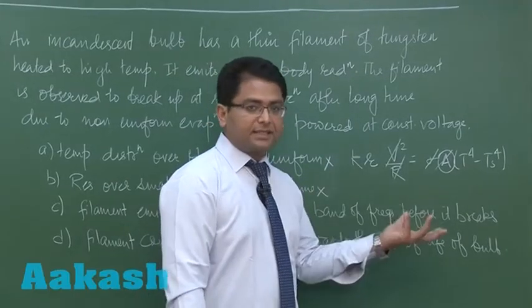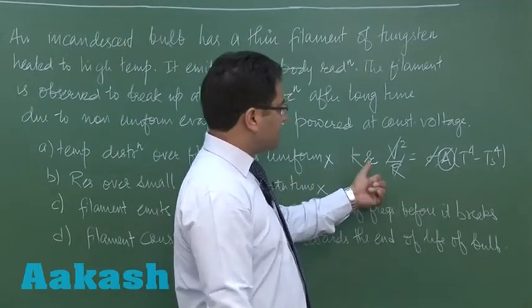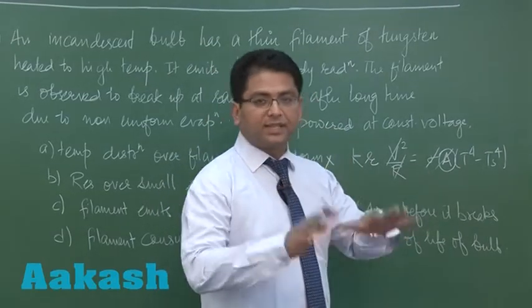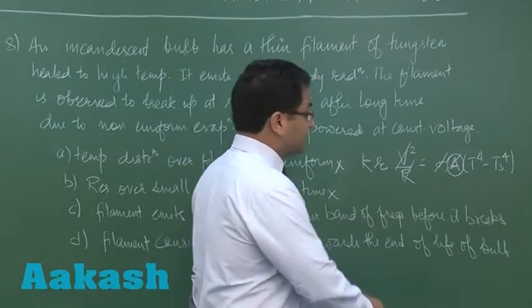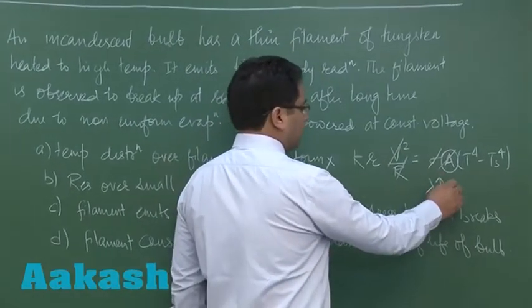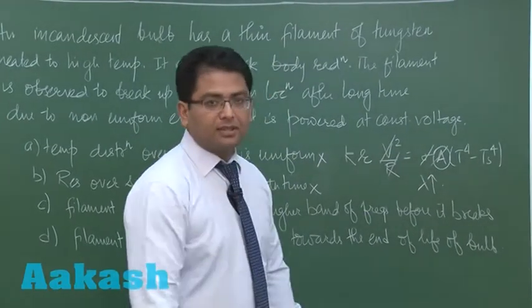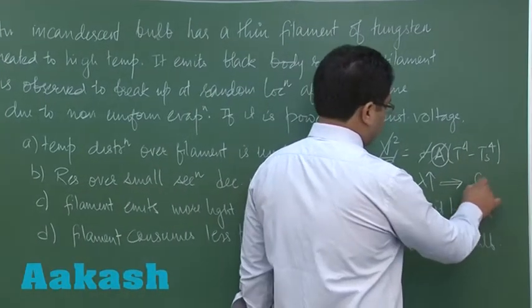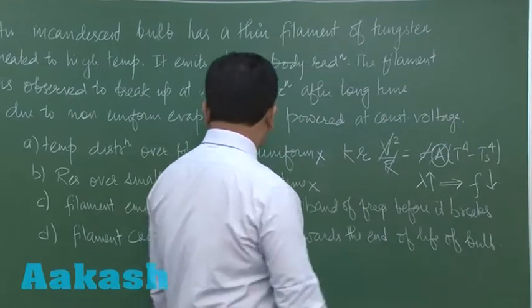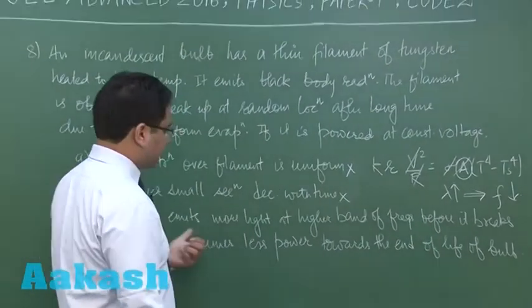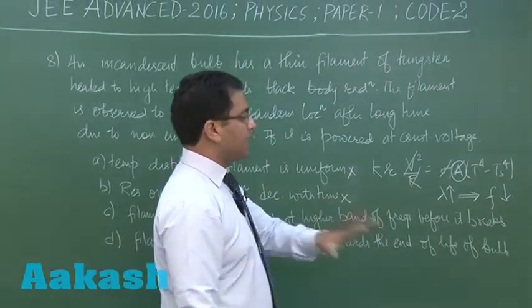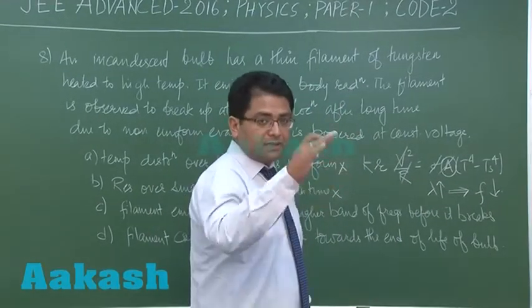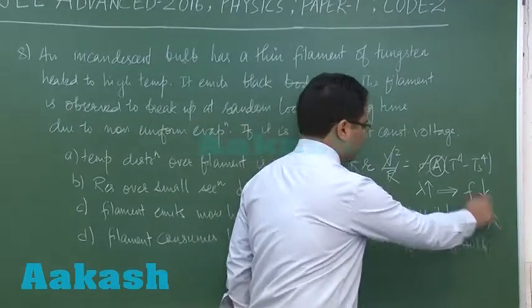Now with increase in time, you see the radius is decreasing—that's very evidently given. So that means the temperature decreases at the later stage. And if temperature decreases, the wavelength has to increase by Wien's displacement law. And if wavelength increases, the frequency has to decrease. But the question says filament emits more light at higher band of frequency, but the calculation says that the frequency would be at a lower band. So this option would be incorrect.